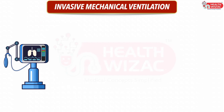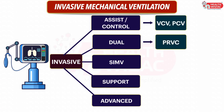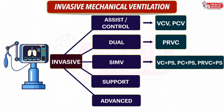Invasive mechanical ventilation comprises the following modes: assist or control mode, dual mode, SIMV or synchronized intermittent mandatory ventilation mode, support mode, and advanced mode that is present in specific machines only. Assist or control mode comprises volume control ventilation and pressure control ventilation. Dual mode comprises pressure regulated volume control ventilation. SIMV mode comprises volume control plus pressure support, pressure control plus pressure support, and pressure regulated volume control plus pressure support.